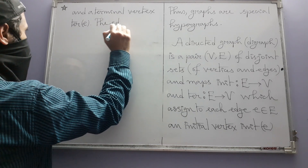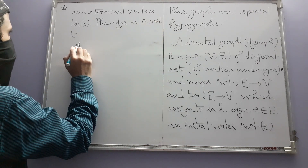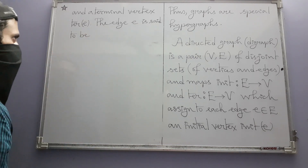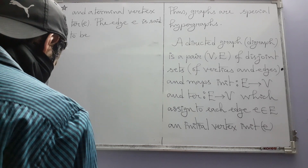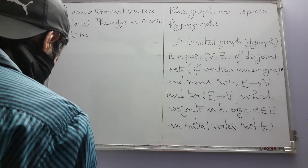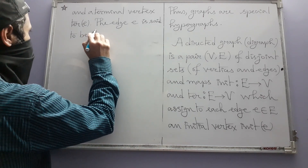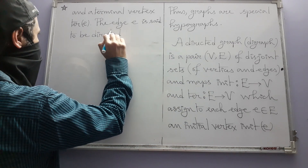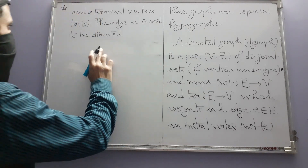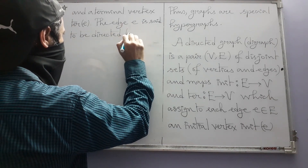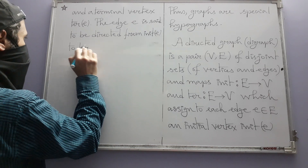The edge E is said to be directed from init(E) to tar(E). There is a direction — analogous to a vector rather than a scalar — and that direction is what distinguishes a digraph from an ordinary graph.